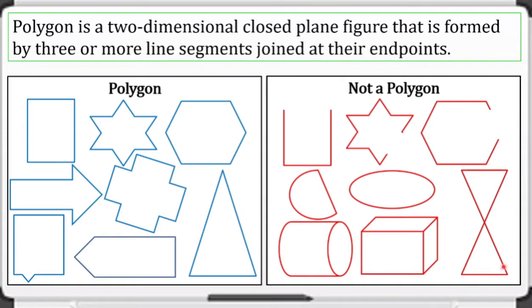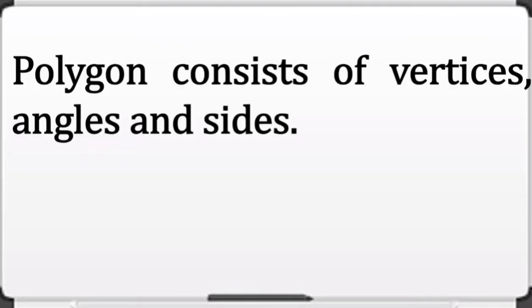What about this one? What makes it not a polygon? As you can see, these two lines intersect at one point, making this not a polygon.